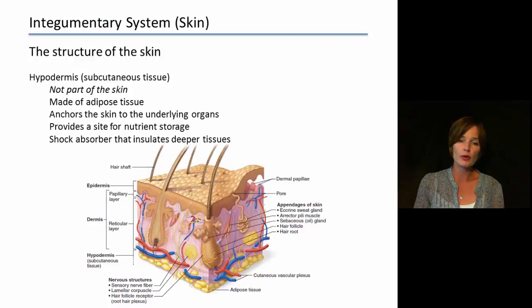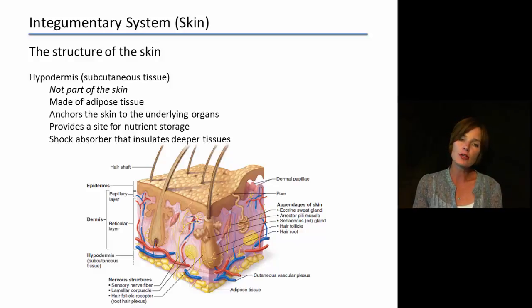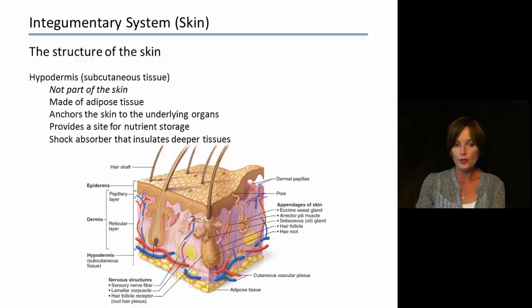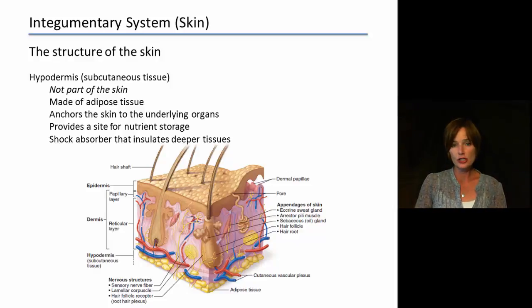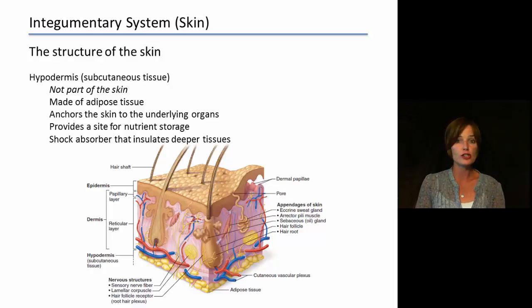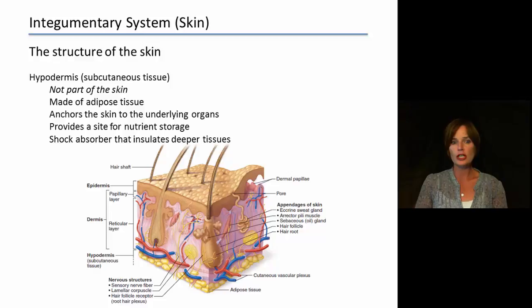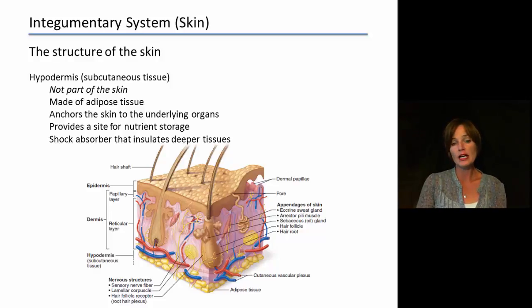Underneath the layers we have what's called the hypodermis, also called the subcutaneous tissue. The hypodermis is not really part of the skin — instead it is made up of adipose tissue that anchors or ties the skin to underlying organs and body components. It also provides a site for nutrient storage, basically fat cells storing excess nutrients. Additionally, it provides cushioning and functions in shock absorption, insulating and protecting deeper layers of tissue.